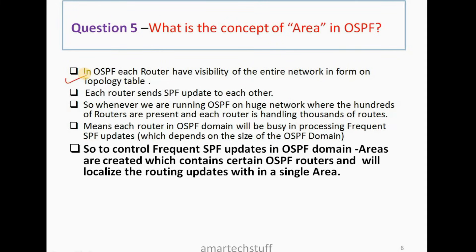In OSPF, areas are created simply to stop frequent SPF updates. Each OSPF router has end-to-end visibility of the entire network via the topology table. In a huge network with hundreds of routers handling thousands of routes, if anything goes down, every router gets an update. This can happen every second or every minute, keeping router CPU utilization always high.